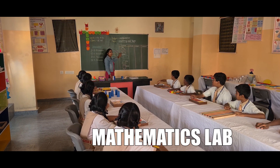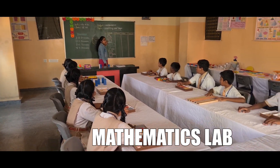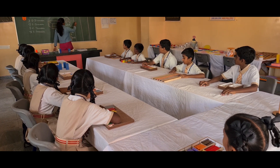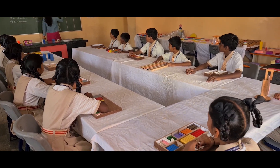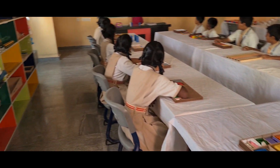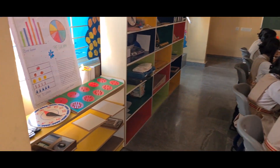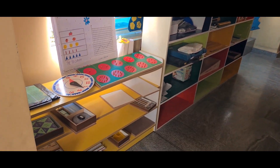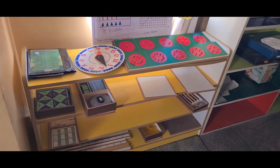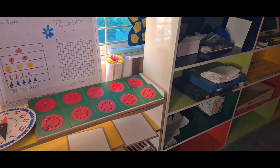How many faces are there? Six faces. Then how many edges are there? Four edges. Then how many vertices are there? Eight vertices. Very good. So, cuboid.